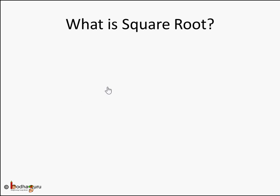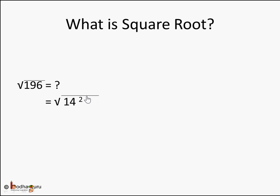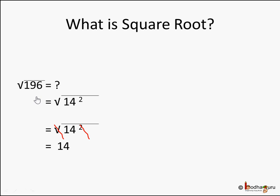Let's revise what a square root is. We know square root is the inverse of the square operation. So if we have to find the square root of 196, we try to find out which square 196 is made of. We know 196 is nothing but 14 squared, so the square root of 196 is the square root of 14 squared. We cancel the square root operator and the square, and we are left with 14. So square root of 196 is 14, or square of 14 is 196. Square root and square are inverse operations.